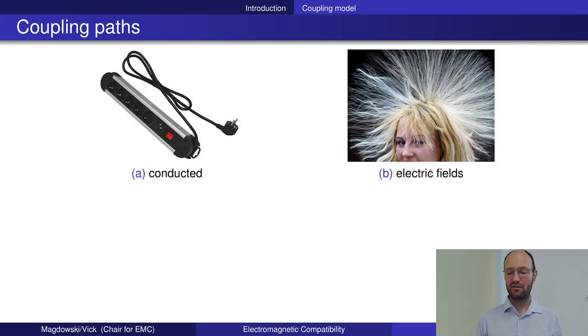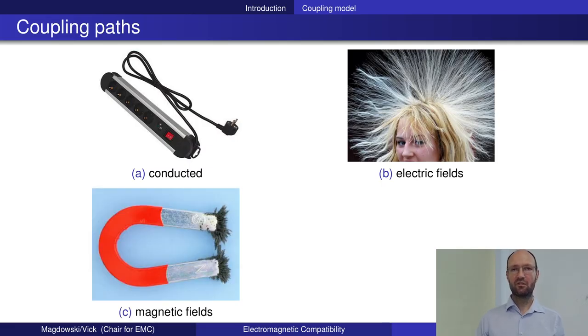The same can happen if you have currents going on cables or wires. Every current is associated with some magnetic field. So you have a cable not with high voltage but with high current. Current goes through the cable and creates a magnetic field. Then you have a second cabling system that forms a loop somewhere. The magnetic field will go through this loop and induce a voltage.